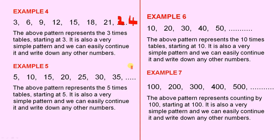Example 5, the above pattern represents the five times tables starting at 5. 5, 10, 15, 20, 25, 30, 35. And because the pattern is perfectly regular, we know that the next number is 40.